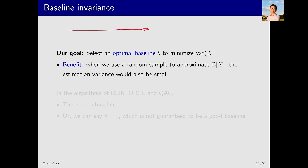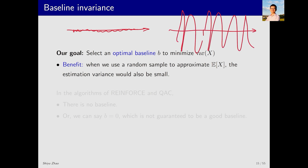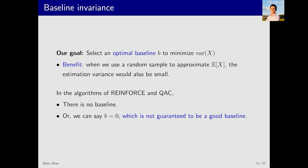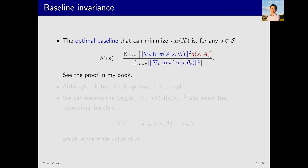Let's look at an example. Suppose there is a random variable sampled at different times. Its expected value corresponds to a specific line, and its variance is very small. Now consider another random variable. Its expected value is also the same line, but its variance is much larger. Clearly, if we sample the random variable with a small variance, each sample will be very close to its expected value E[X]. However, if the variance is large, the sample could differ greatly from E[X]. Thus, we want the variance of X to be as small as possible. In earlier algorithms like REINFORCE and QAC, there is no baseline — mathematically, this means the baseline B is equal to 0, which may not be a very good baseline.